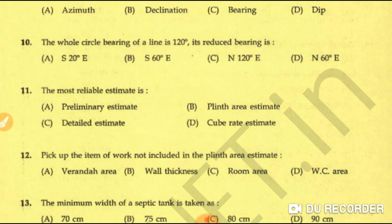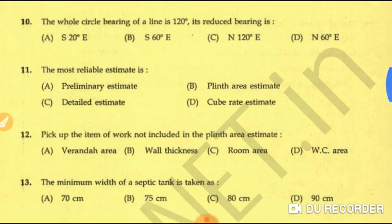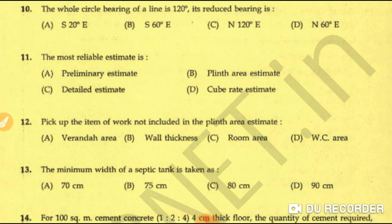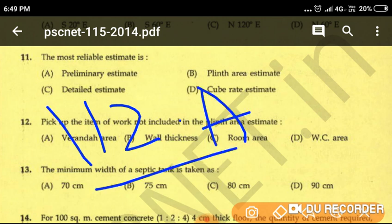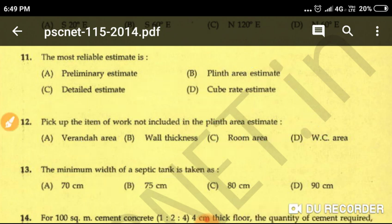Question number twelve: pick up the item of work not included in the plinth area estimate — option A: veranda area, option B: wall thickness, option C: room area, option D: water closet area. Wall thickness, room area, and water closet area are included in the plinth area estimate. Veranda area is not included, so option A is the correct answer.